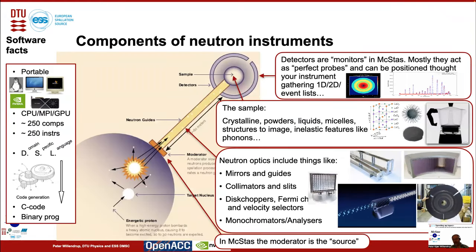Instruments, as they are described in McStas, contain components that realize the different beamline parts. This covers neutron sources, optics, various types of matter that you can put in your instrument as a sample, and then detectors or monitors to probe your neutron beam. McStas is very portable: it runs on single CPUs, runs parallelly on CPUs using MPI, and we've now added GPU support for NVIDIA GPUs. We have 250 components and 250 instruments that exemplify how to use the components. McStas uses a domain-specific language, and a code generation mechanism then generates a C code program containing exactly the components you put in your instrument.